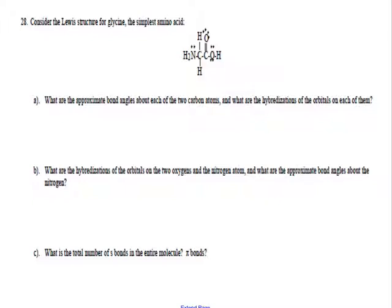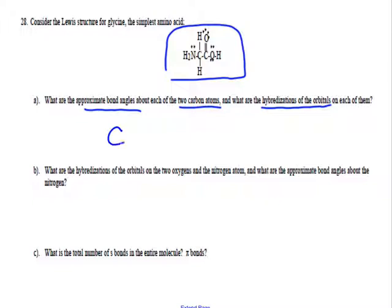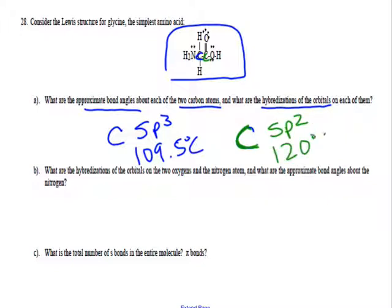Now let's look at a larger molecule where you'll be asked multiple questions about bond angle, polarity, hybridization, and geometry for individual atoms. The first carbon has four areas, so the hybridization is sp3 and the bond angle is 109.5 degrees since all four areas are bonded. The second carbon has three areas, so the hybridization is sp2 and the bond angles are 120 degrees.